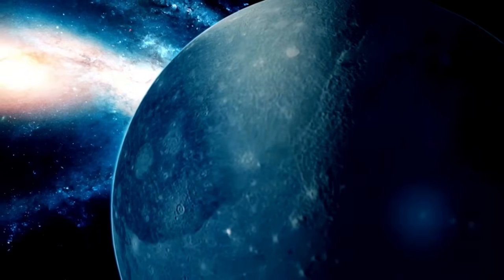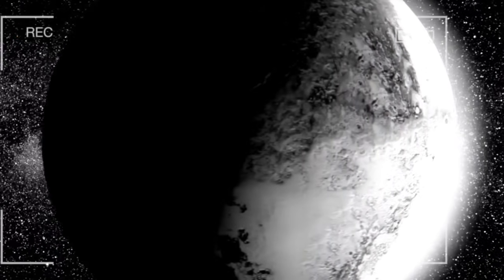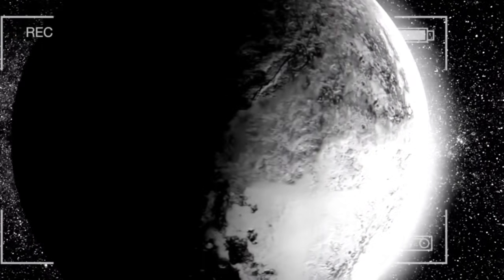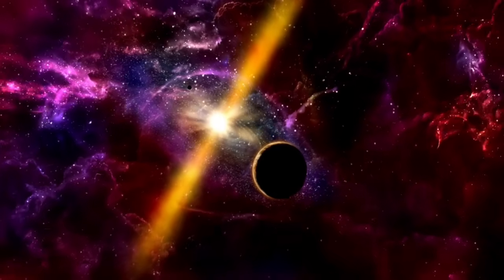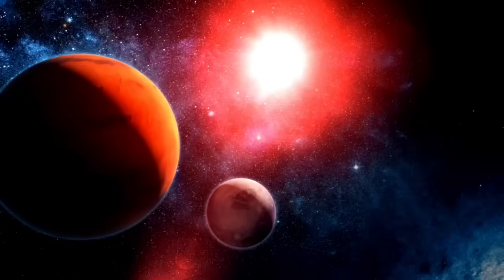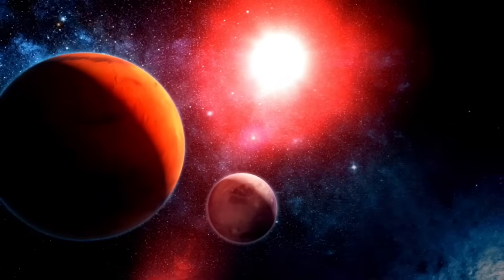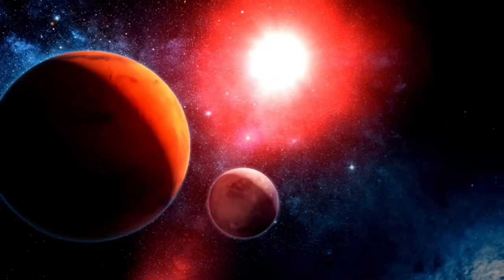Some scientists argue that if an instability were detected far enough in advance, humanity might one day be able to intervene, perhaps by using gravitational assists or controlled impacts to nudge Pluto back into a safer path. But what if a catastrophic shift in Pluto's orbit were to occur much sooner than expected?